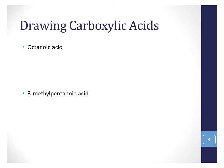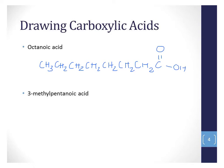Just like with aldehydes, when we're drawing carboxylic acids, we start carbon one at the carbon in the carboxyl group, in the C double bond O, OH. So octanoic acid has 1, 2, 3, 4, 5, 6, 7, 8 carbons, and 'oic acid' tells us it is a carboxylic acid with a carboxyl group at carbon one.